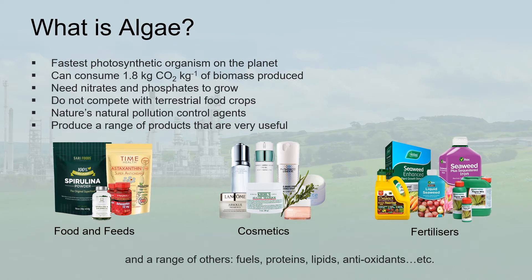In this environment I think it's pretty fair to say we all know what algae are and what they can do. I'll just stress the fact that they're the fastest photosynthetic organism on the planet and that they consume 1.8 kilos of CO2 for every kilogram of biomass, which means they can help mitigate greenhouse gas emissions. At the bottom of this slide you can see a range of different products available from algae or algae-derived materials, offering us a vast array of products we just need to be able to harvest them.